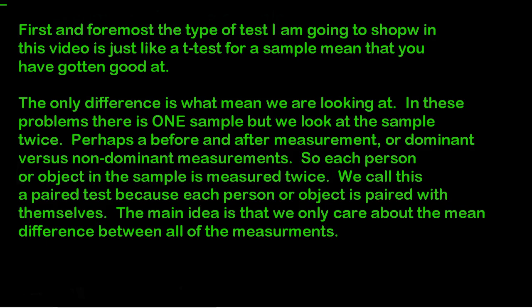So each person is paired with themselves. Or maybe we do a dominant versus non-dominant hand. So we have everybody throw a baseball with their dominant hand, and then we have them throw a baseball with their non-dominant hand. So we have one sample, but we're measuring everybody in that sample twice. We call this a paired test because each person is essentially paired with themselves.